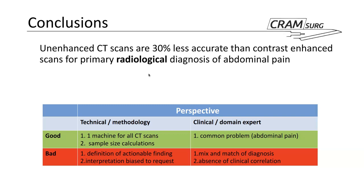In summary: unenhanced CT scans are 30% less accurate than contrast enhanced scans for primary radiological diagnosis of abdominal pain. Good points of the study: one machine was used for all CT scans and a sample size calculation was used. Bad points: poor definitions of actionable findings and interpretation bias of the request. Clinically, abdominal pain is a common problem relevant to most people in ED and general surgeons. Negatives include mixed and matched diagnoses and absence of clinical correlation.